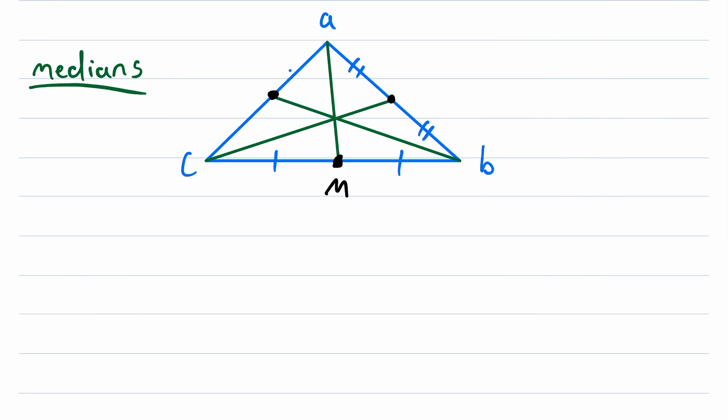And we know that this segment up here is congruent to this segment down here, because this black point is the midpoint of the line segment AC.